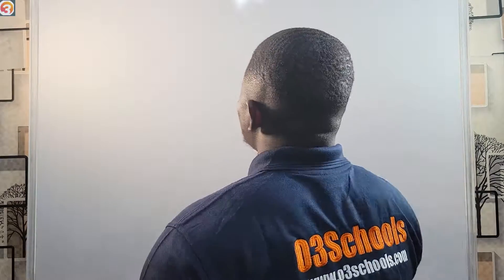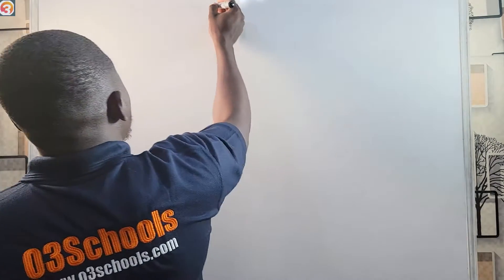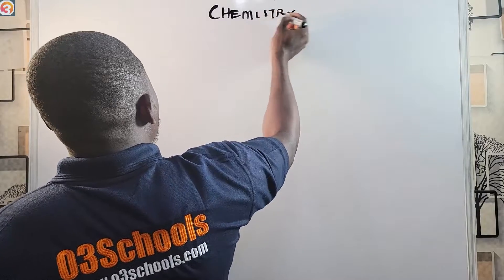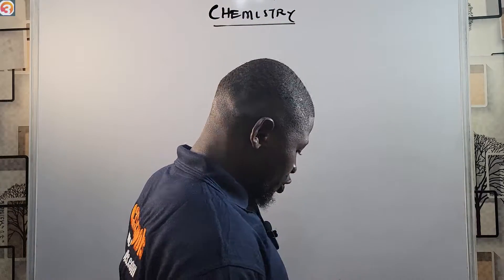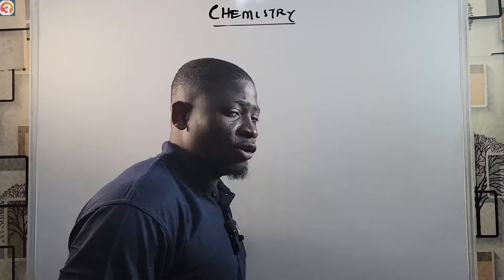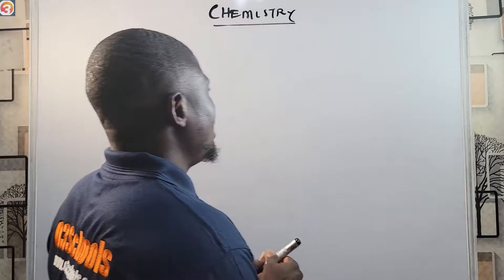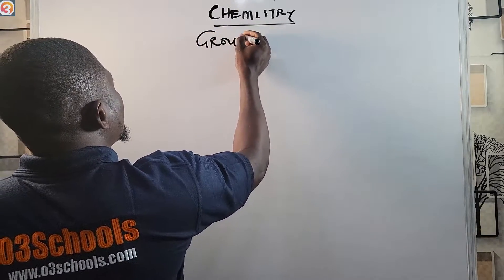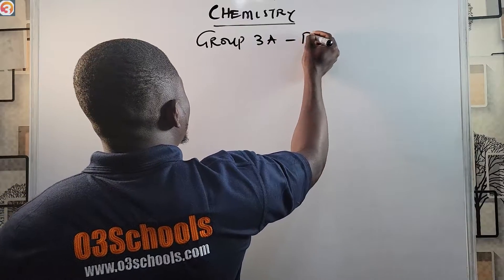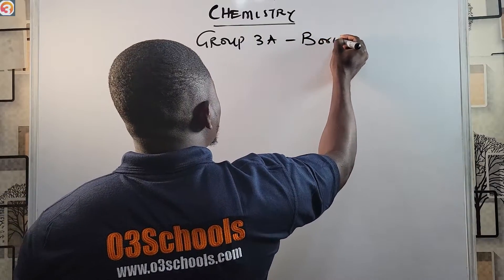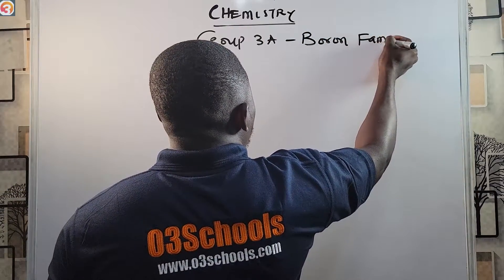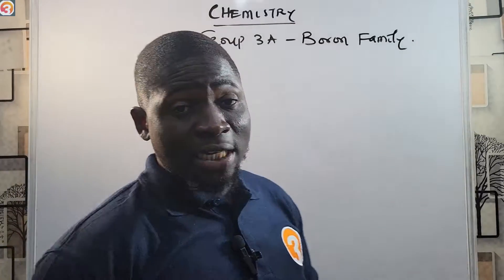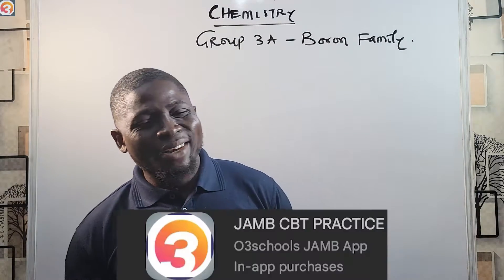Hello guys, welcome back to chemistry class. This is another episode on chemistry, and in this episode we'll continue our study on the periodic table. We are now in Group 3A — the one we call the Boron family.